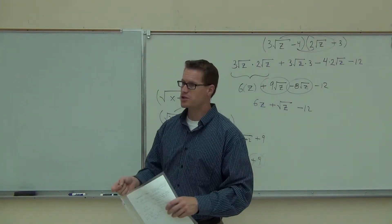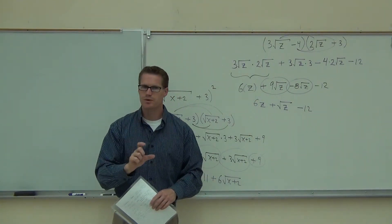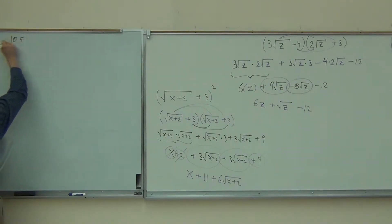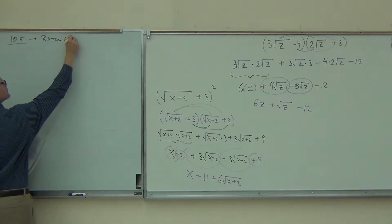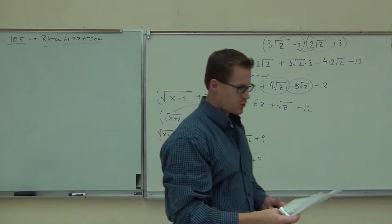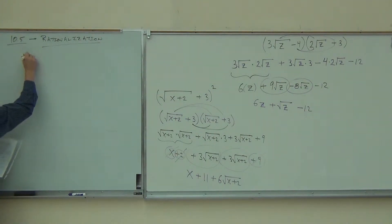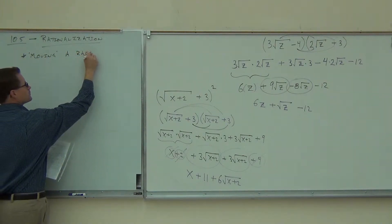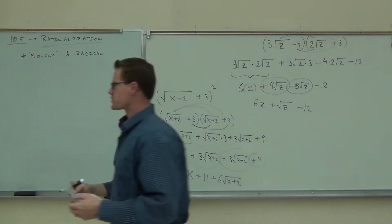We're going to learn right now in section 10.5 how to rationalize either the numerator or the denominator. Most of the time — 90% of the time — it's the denominator. We want to get the square root, or the root, off the denominator. Rationalization means we're moving a radical off the top or off the bottom of some fraction. Let's start with denominators first.